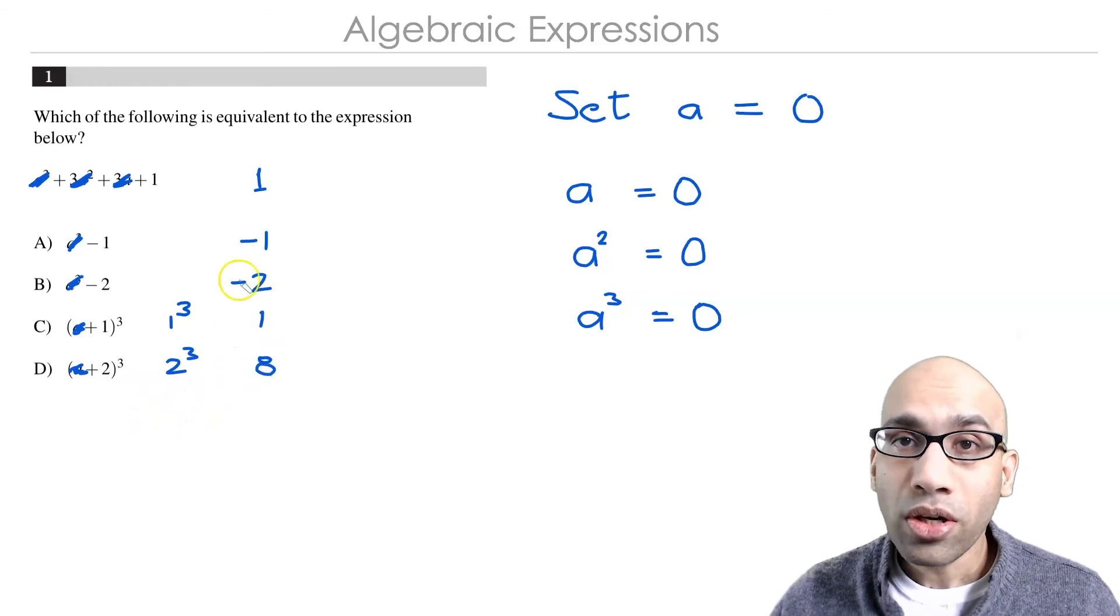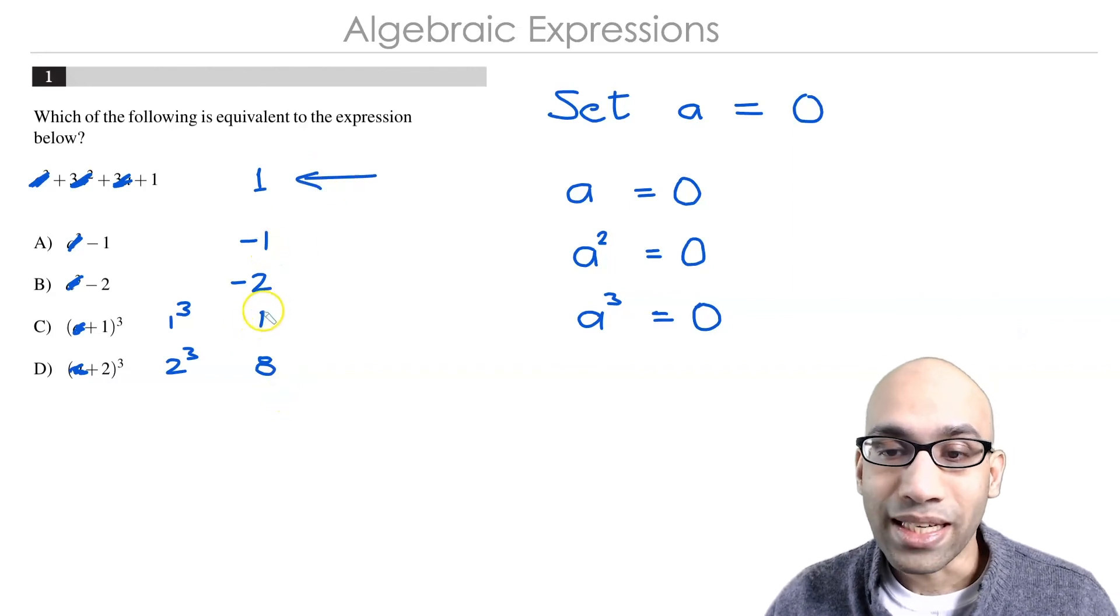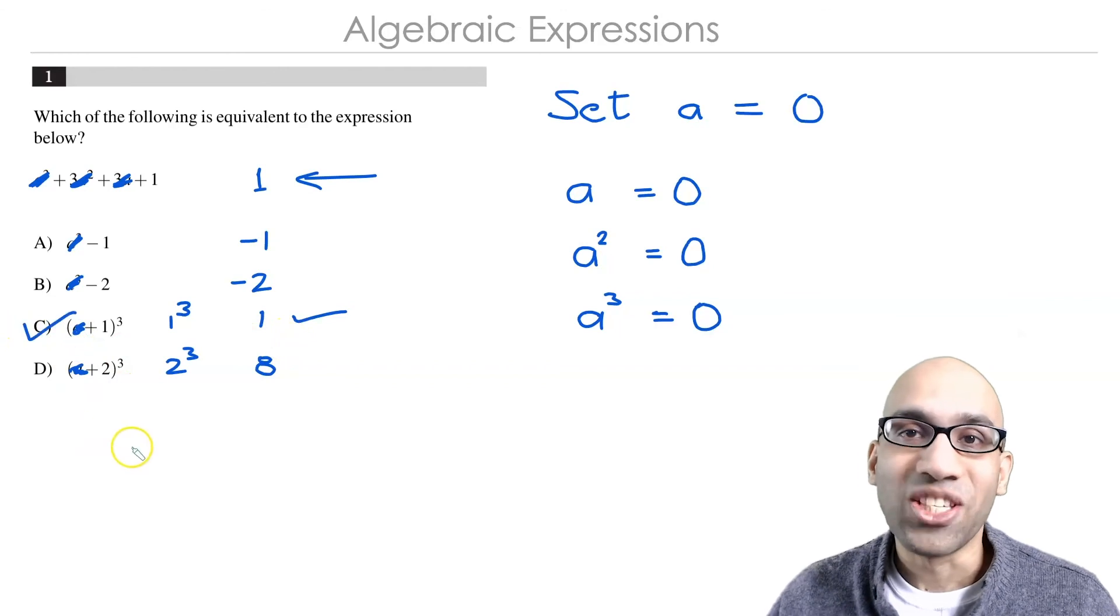And now all you're going to do is compare this value to the answer choices. And you can see it just compares exactly to 1, and so C is your correct answer.